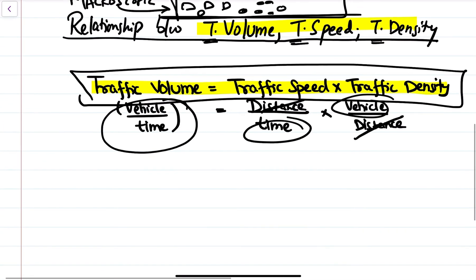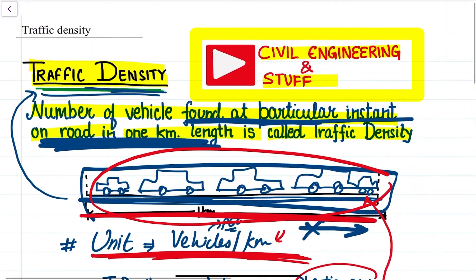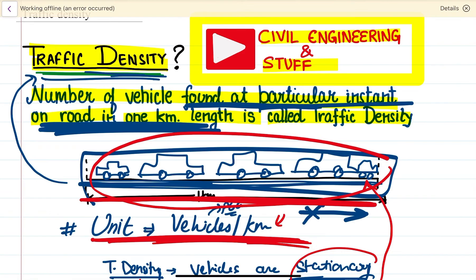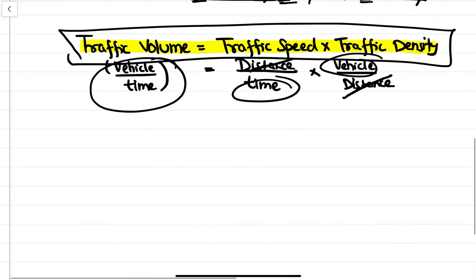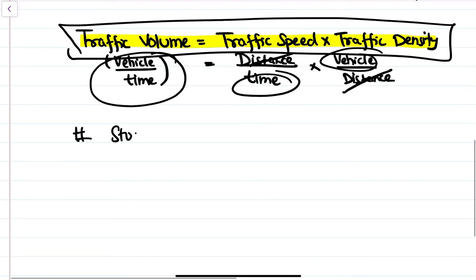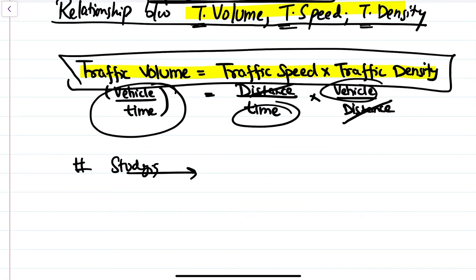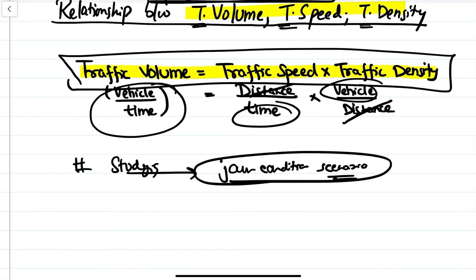The purpose of studying traffic density is that it gives us the overall flow rate of the road. It helps to find out the jam condition scenario and allows us to formulate correlations between fundamental parameters like traffic speed, traffic capacity, and traffic density. It helps to understand in detail the movement of traffic at a particular instant of time.